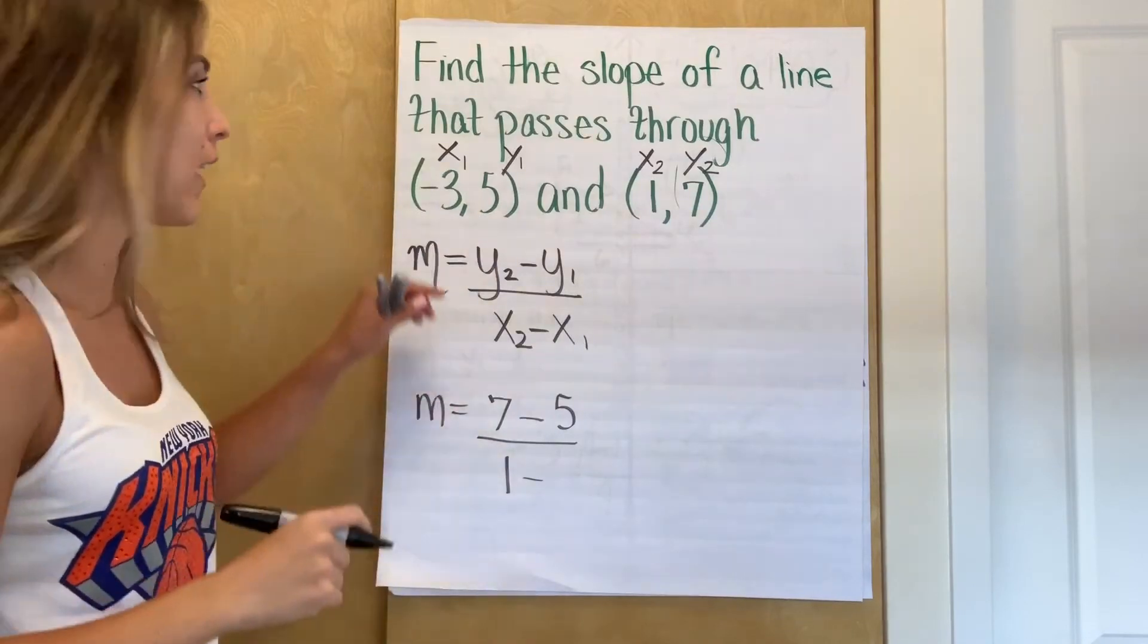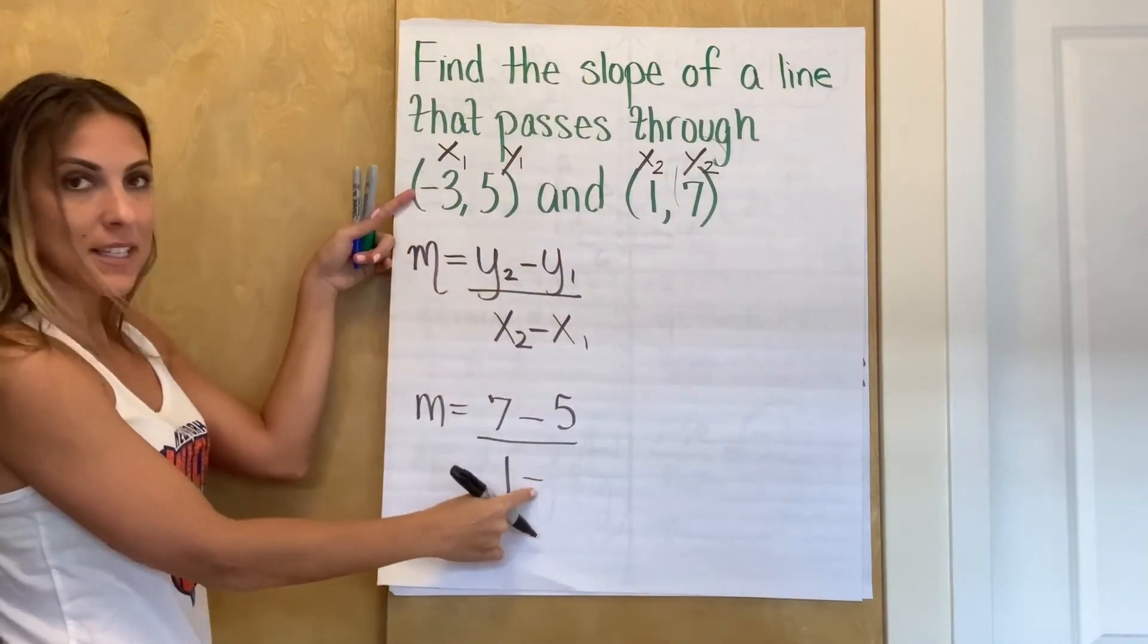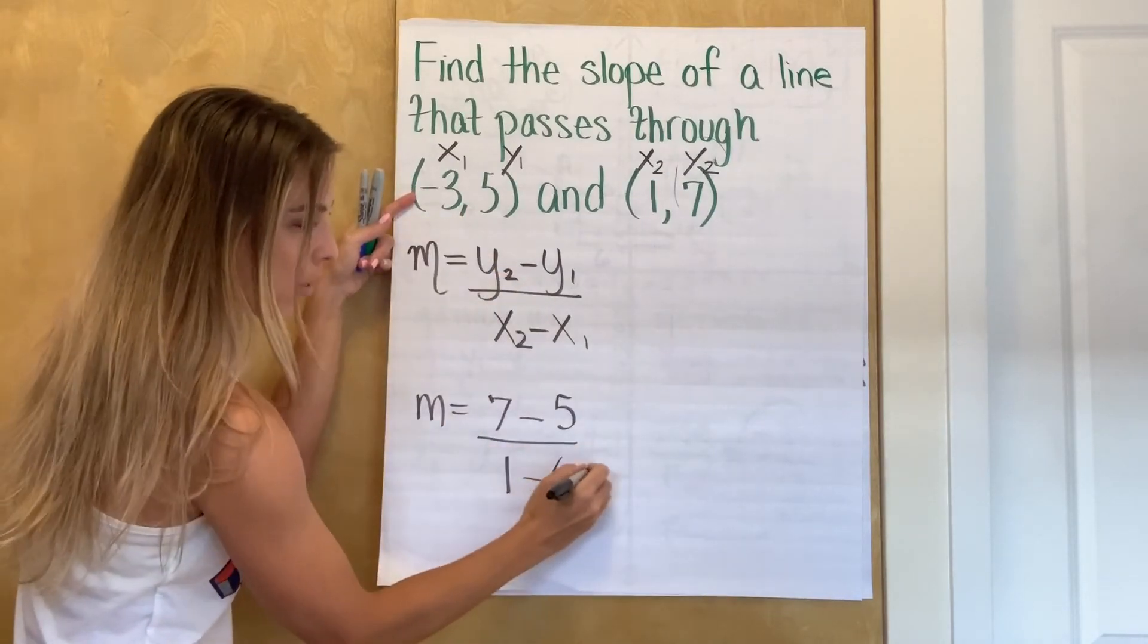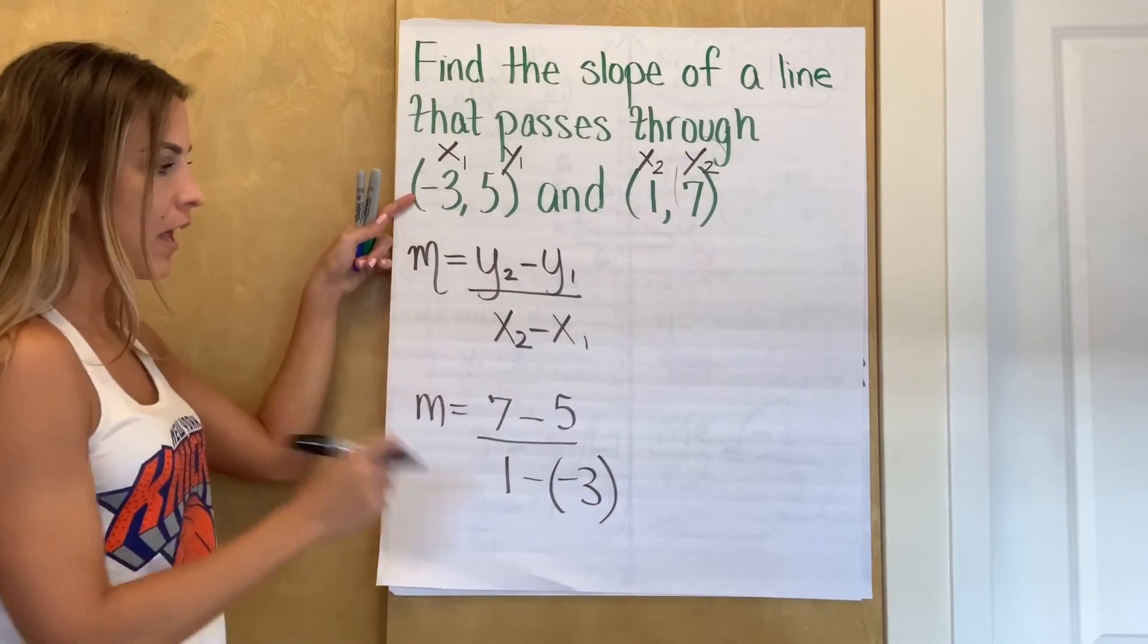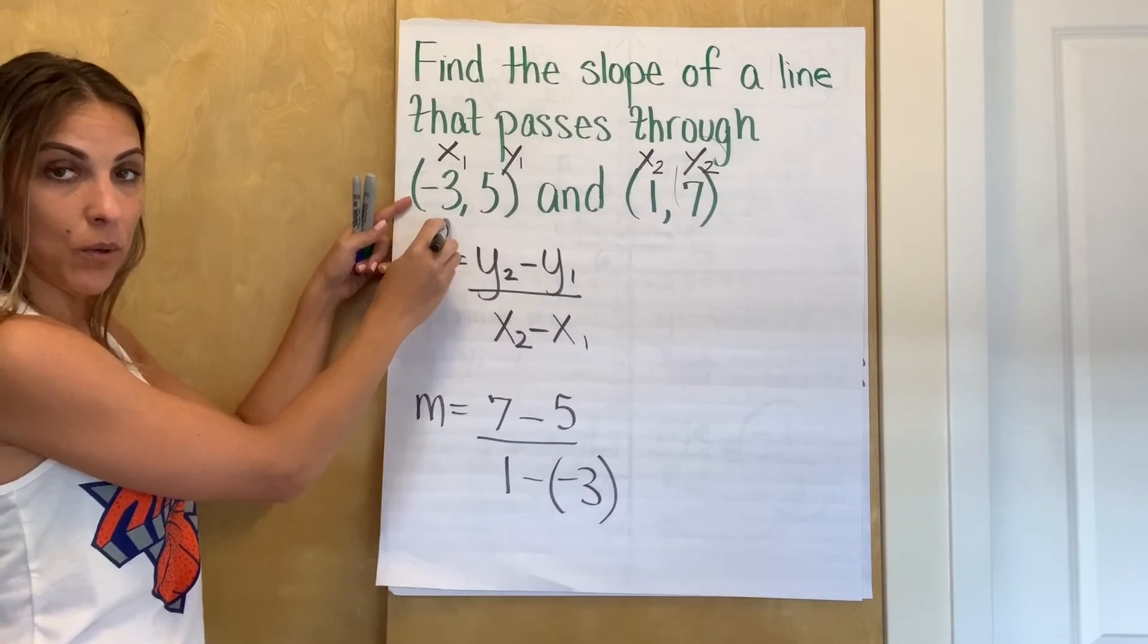This is somewhere where you might get a little bit confused. My x1 is negative three. That minus sign doesn't take the place of that negative three. I still have to write a negative three here. So it's not one minus three. It's one minus negative three. Okay.